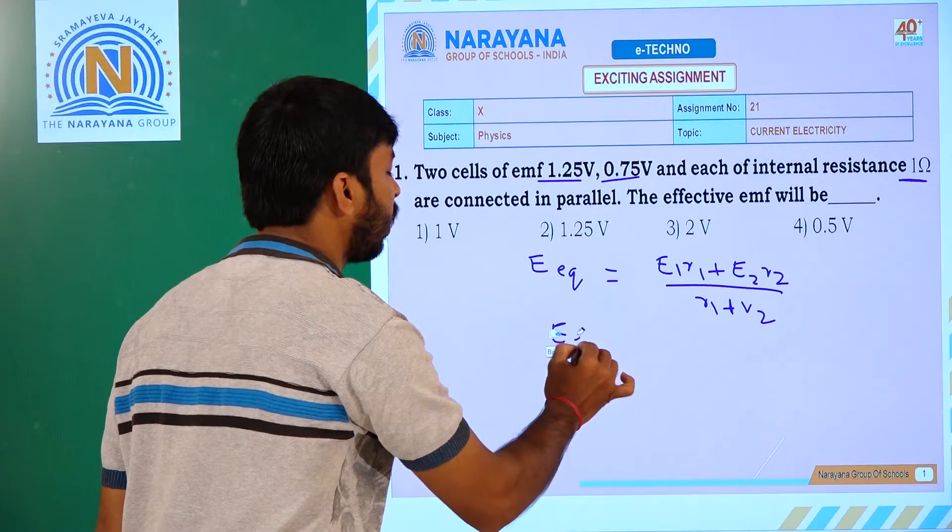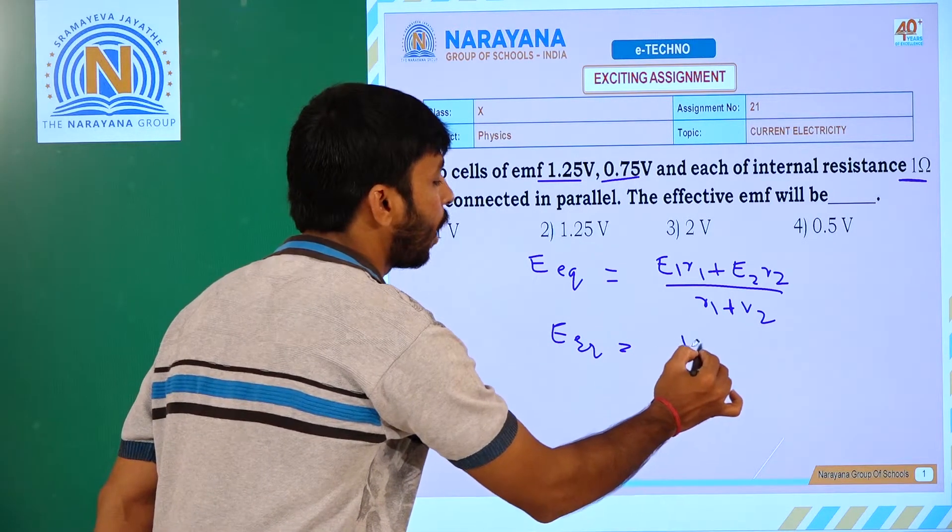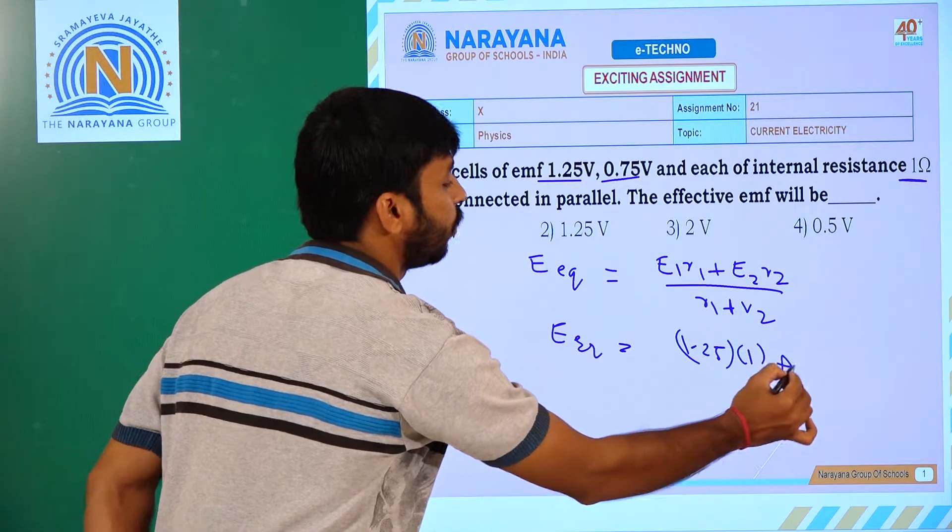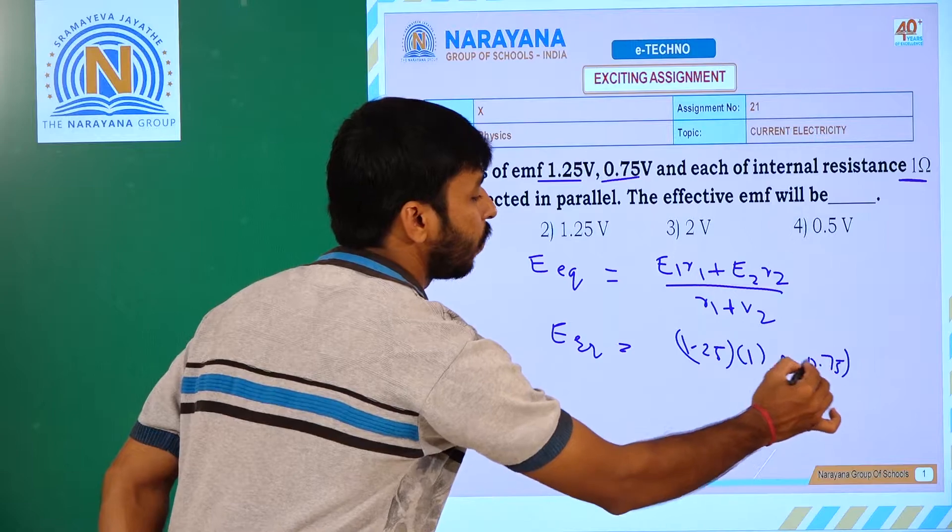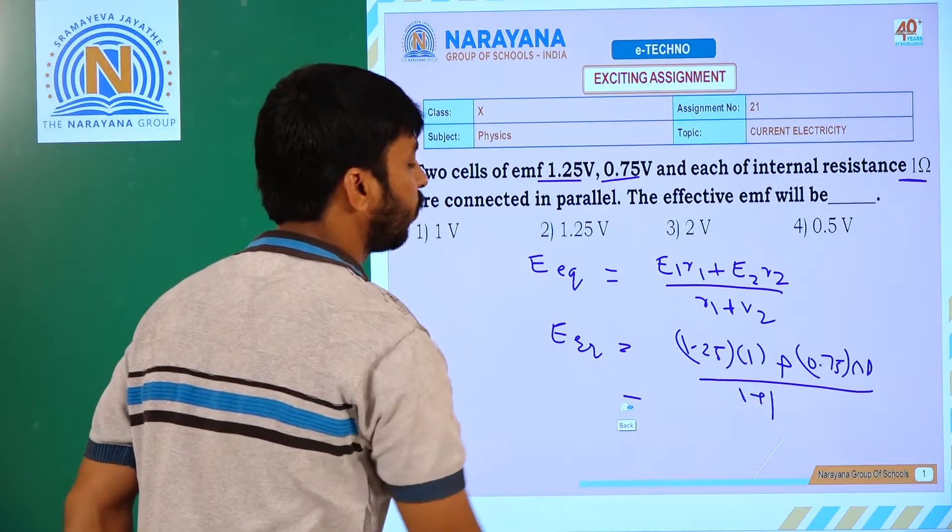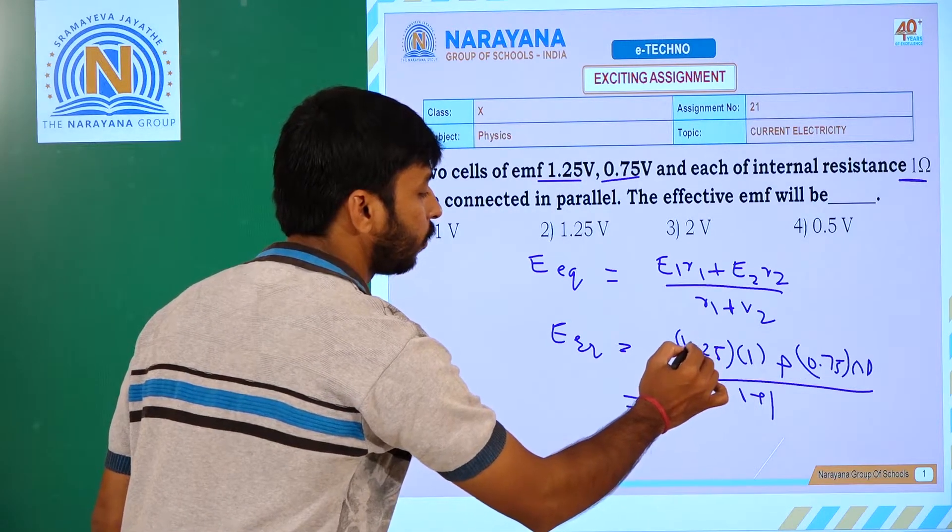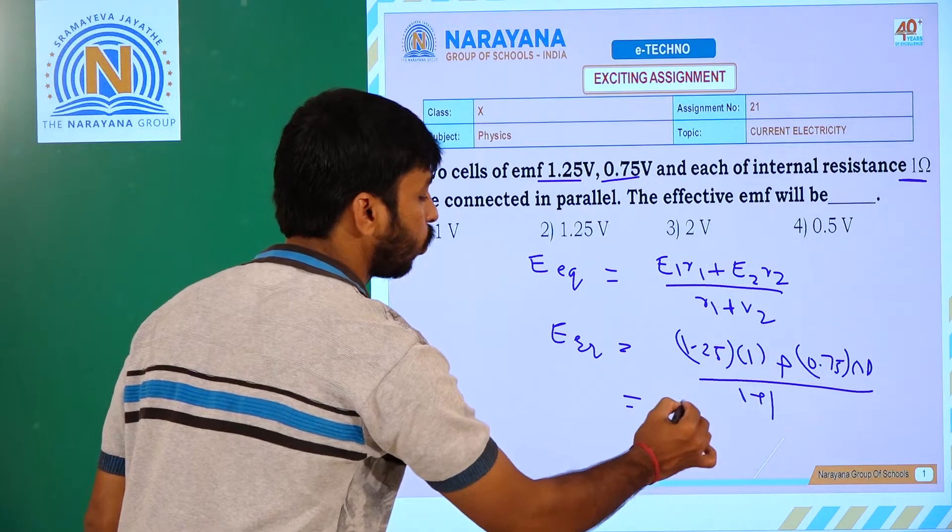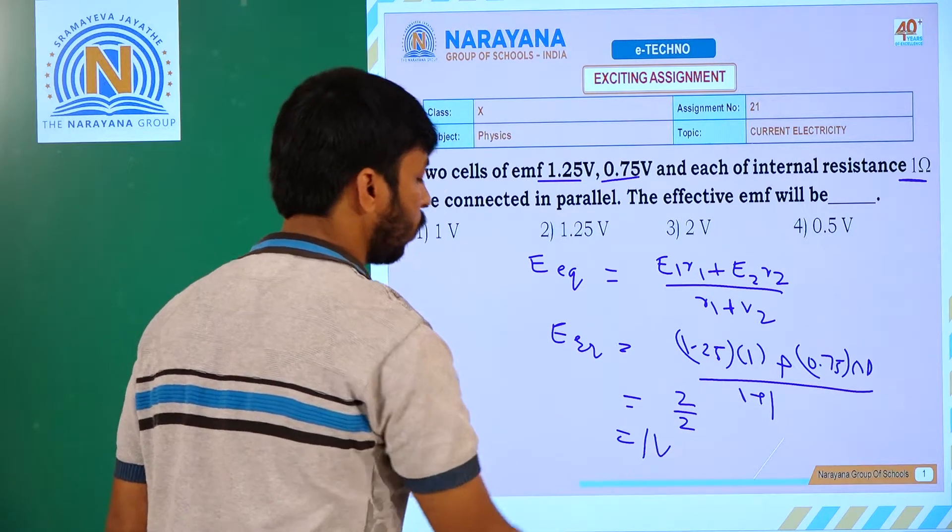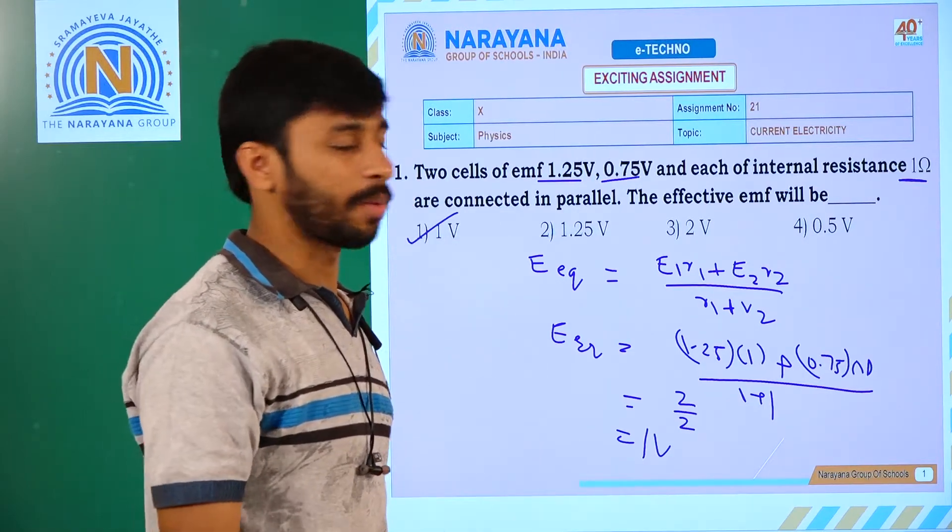So E equivalent is equal to 1.25 into 1 plus 0.75 into 1 by 1 plus 1. So total is 1.25 plus 0.75 equals 2 by 2, that is equal to 1 volt. This is option number 1, correct option.